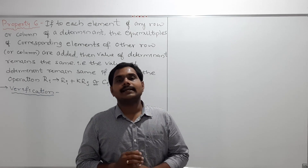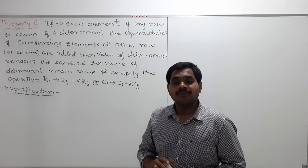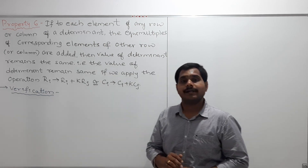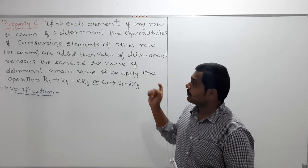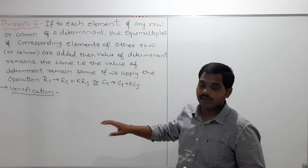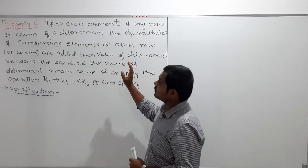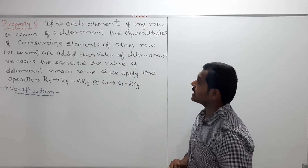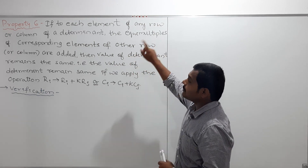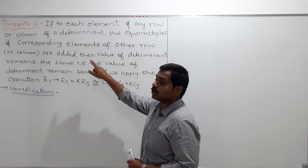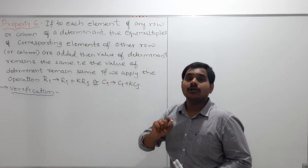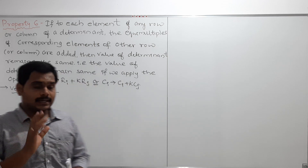In the previous videos I discussed the five properties of determinants. In this class I am going to discuss the sixth property. The statement is already written here, so we'll verify it. The property states: if to each element of any row or column of a determinant the equimultiples of corresponding elements of other row or column are added, then the value of the determinant remains the same.